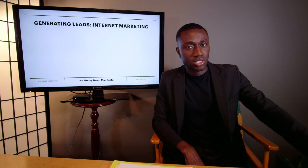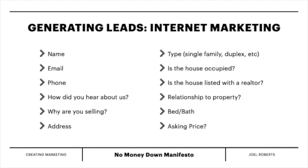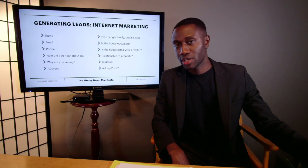Now let's talk about what we're going to put on the landing page and what type of information you're going to get from the seller. Obviously you want their name, email, and phone number so you can reach out right away if it's a good deal. You also want to know how they heard about you, so you can track your different marketing methods — whether a lead came from a bird dog or a specific ad — and this helps you optimize things within your business. Also ask: why are you selling?